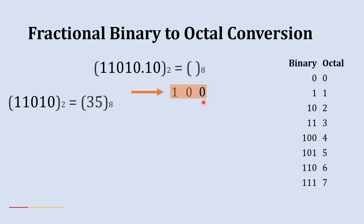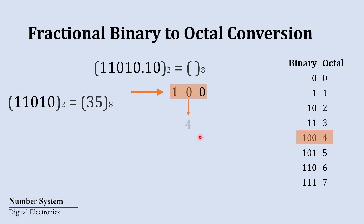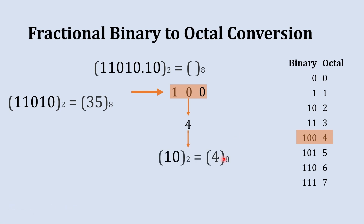Adding the zero on the right-hand side will not impact the value of that number. Our three-digit group is now 1 0 0. The octal equivalent to 1 0 0 is 4, so we write 4 below it. The octal equivalent to this fractional binary part is 4.